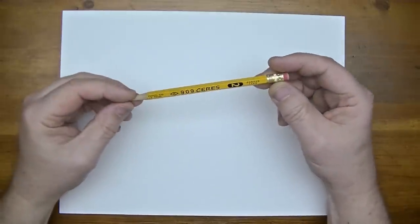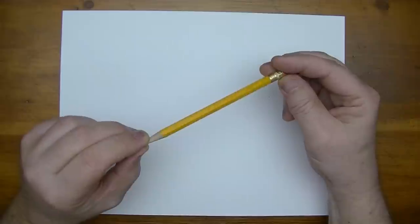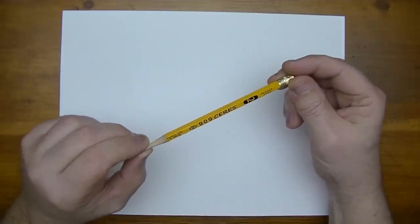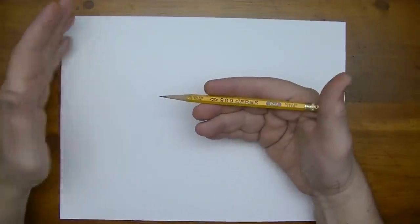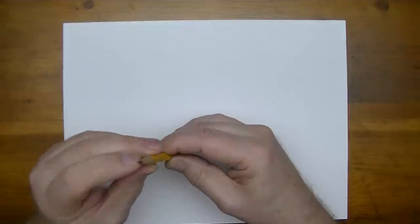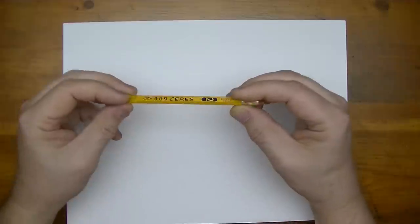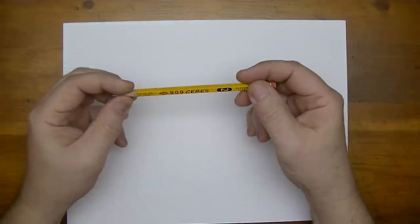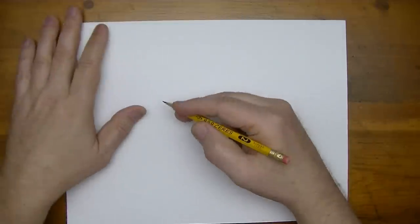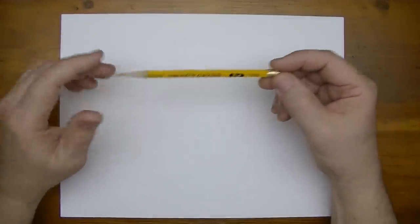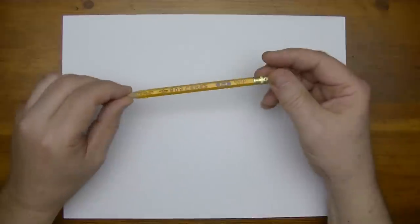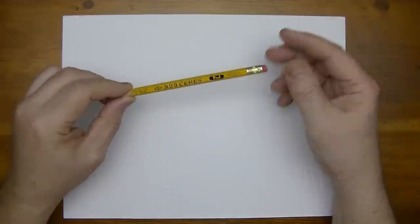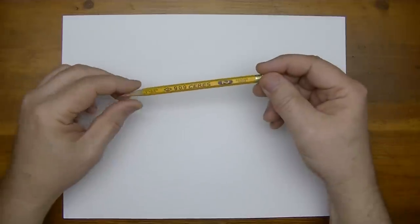What I have here is your standard HB or number two pencil. It's a common pencil that has graphite in the center and it's encased in wood with a ferrule and a coarser eraser. Usually for writing, though you can draw with it and you can do lots of nice drawings. However, it is just one shade and that is the HB shade.